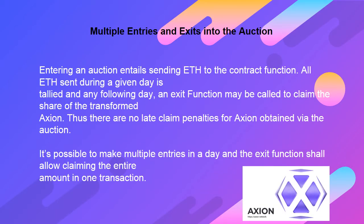Multiple entries and exits into the auction are possible. Entering an auction entails sending ETH to the contract function. All ETH sent during a given day is tallied, and any following day an exit function may be called to claim the share of the transformed Axion. Thus there are no late claim penalties for Axion obtained via the auction, and the exit function allows claiming the entire amount in one transaction.